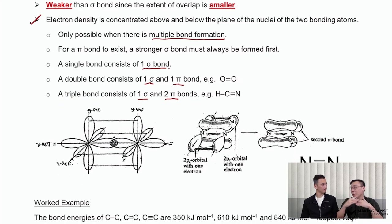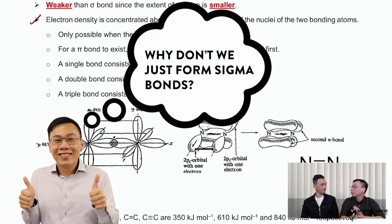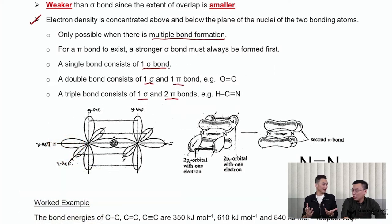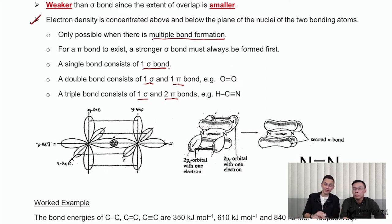Since sigma bond is more effective and it's a stronger bond, why don't we just all form sigma bonds? This is a very good question which students like to ask — why is the double bond not two sigma, since sigma is kind of better than pi? Why not all sigma? There's a reason for this, and we're going to use one very complex example to illustrate this.